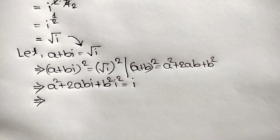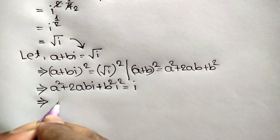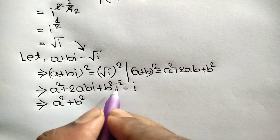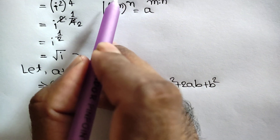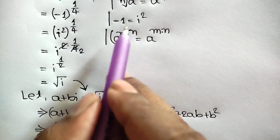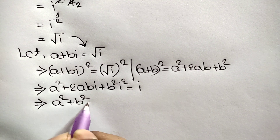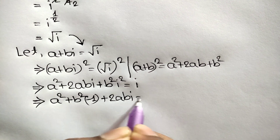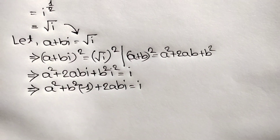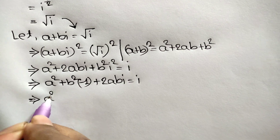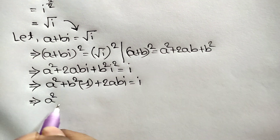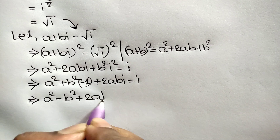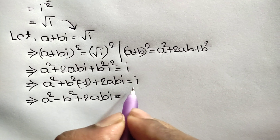Rearranging the left side, we write a squared plus b squared i squared. Since i squared equals negative one, we get a squared minus b squared plus two abi equals i.